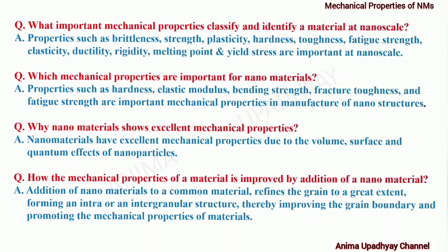How are the mechanical properties of a material improved? By addition of nanomaterials. Addition of nanomaterials to a common material refines the grain to a great extent, forming an intra or intergranular structure, thereby improving the grain boundary and promoting the mechanical properties of materials.